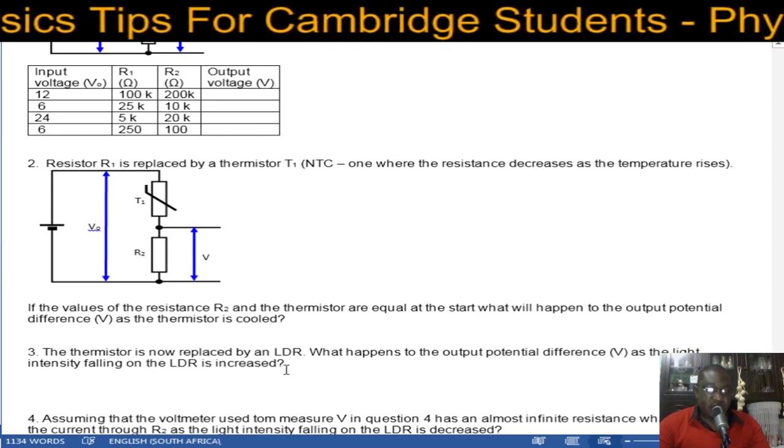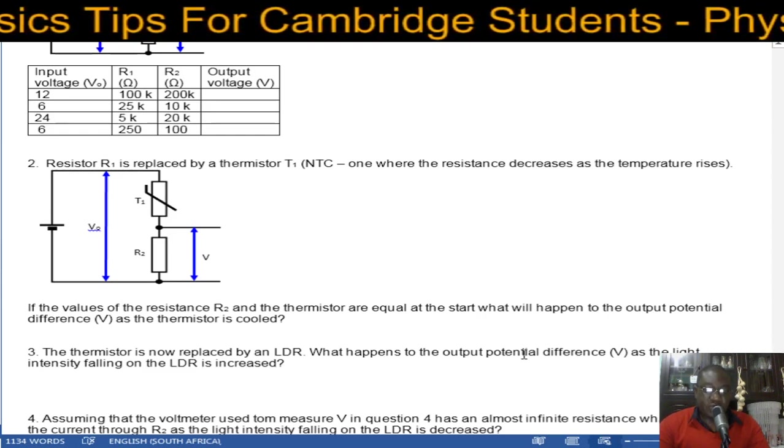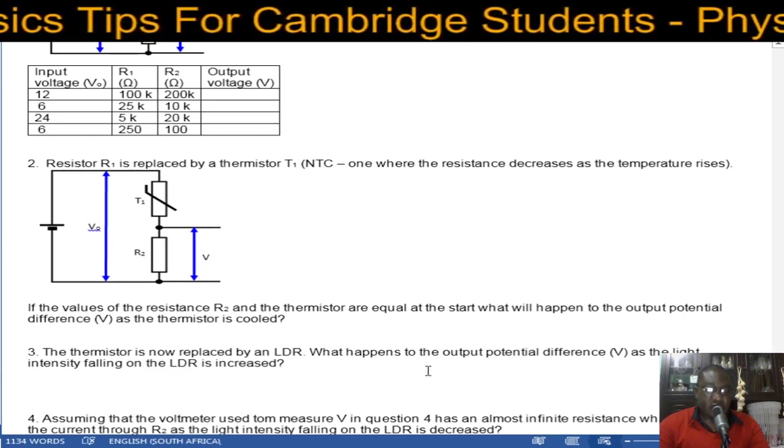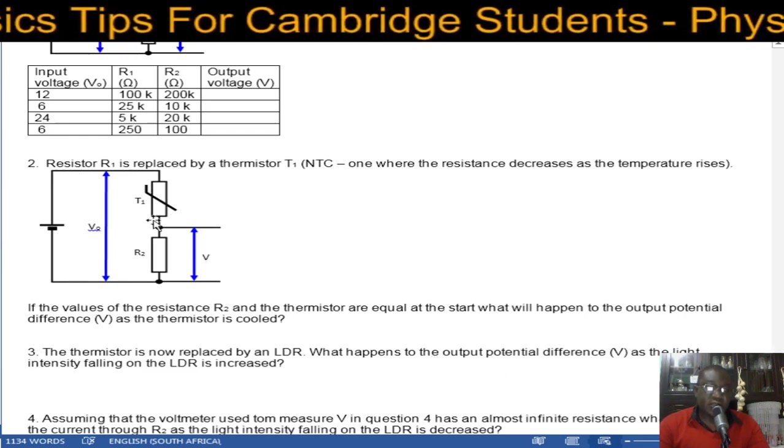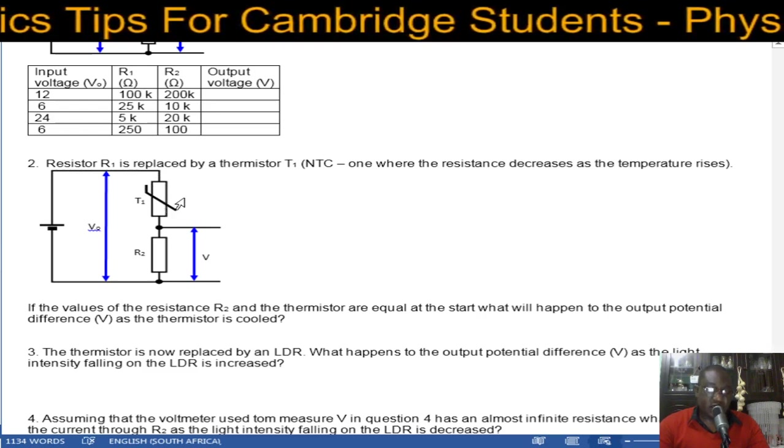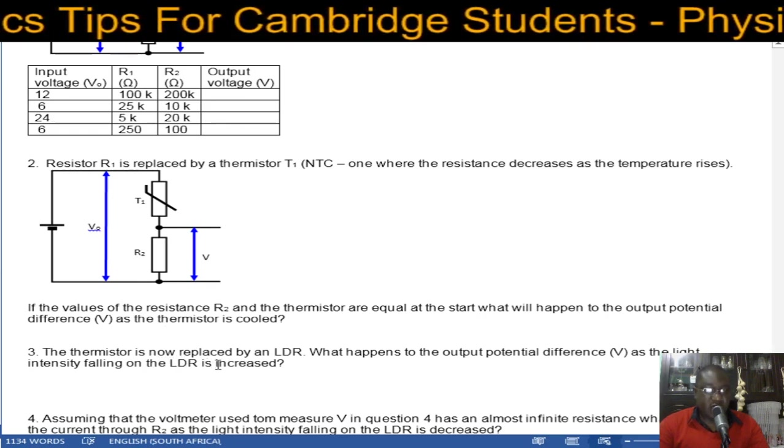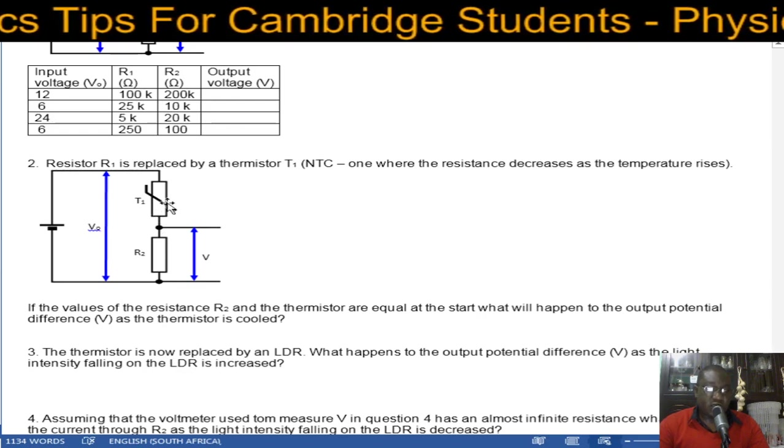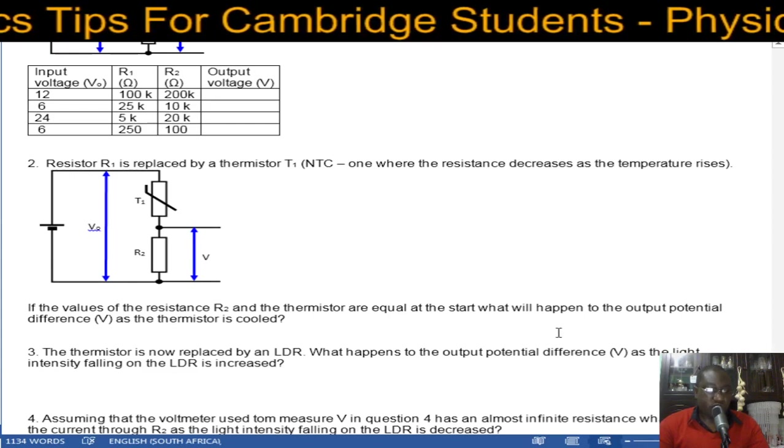The thermistor is now replaced by an LDR. What happens to the output potential difference V as the light intensity of the LDR is increased? In LDR, its resistance decreases as light intensity increases. So which means you are told that the light intensity is increased. So its resistance starts to decrease. Now we have got more output voltage across R2 in that case.